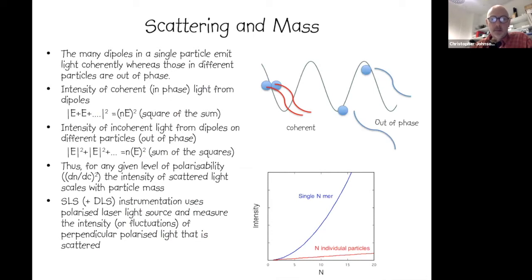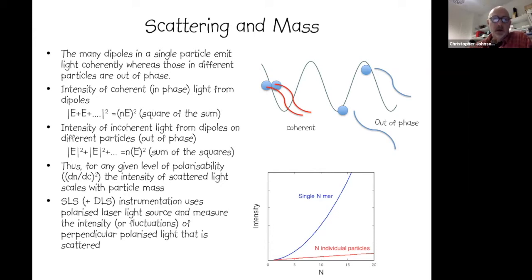One classic application of scattering is to determine particle mass. Within a biological macromolecule, there are many dipoles, and they will in general emit light coherently, whereas light from different particles in solution is out of phase. For coherent in-phase light, we have the square of the sum of scattered amplitudes, whereas for incoherent out-of-phase light, we have the sum of the individual intensities squared.